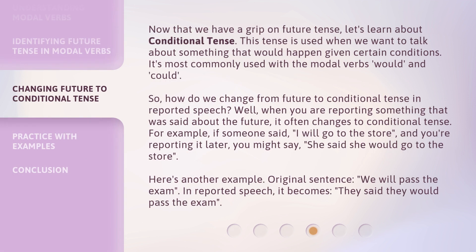Now that we have a grip on future tense, let's learn about conditional tense. This tense is used when we want to talk about something that would happen given certain conditions. It's most commonly used with the modal verbs "would" and "could."